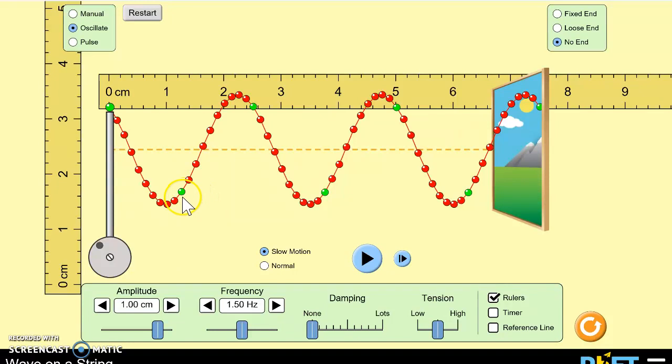We could also look at each particle's displacement. See this dotted orange line here? This represents the undisturbed position. And so when the particles have zero displacement, they are right on this line. This one is pretty close to zero displacement. Do you see any others? This, this, this, and these two.